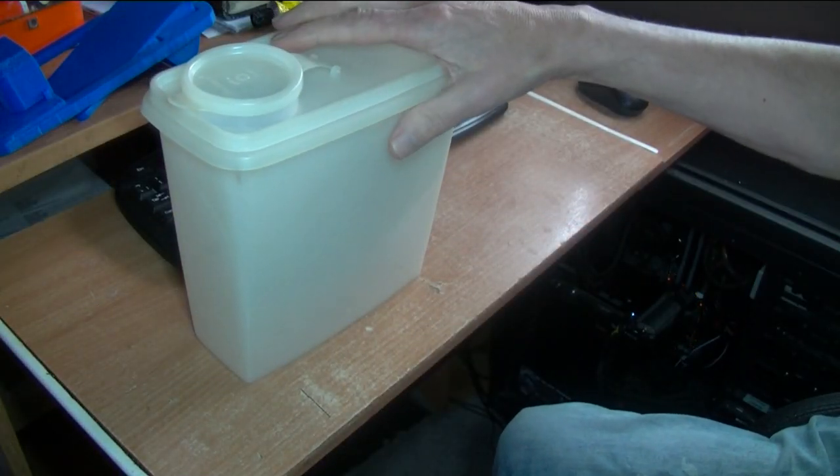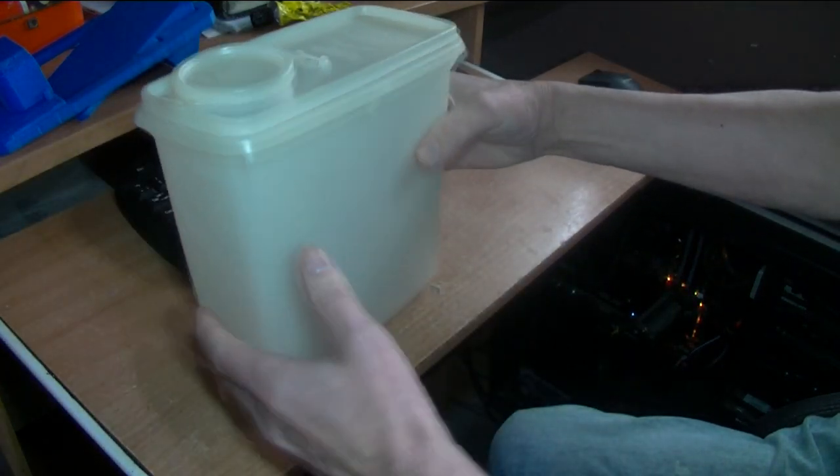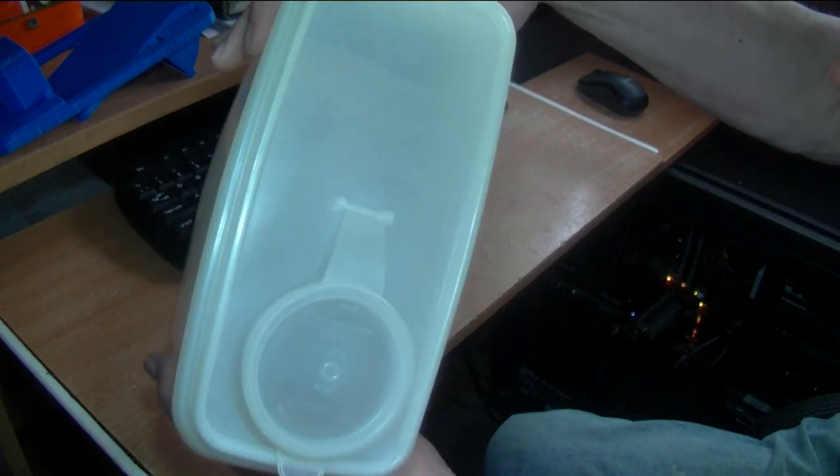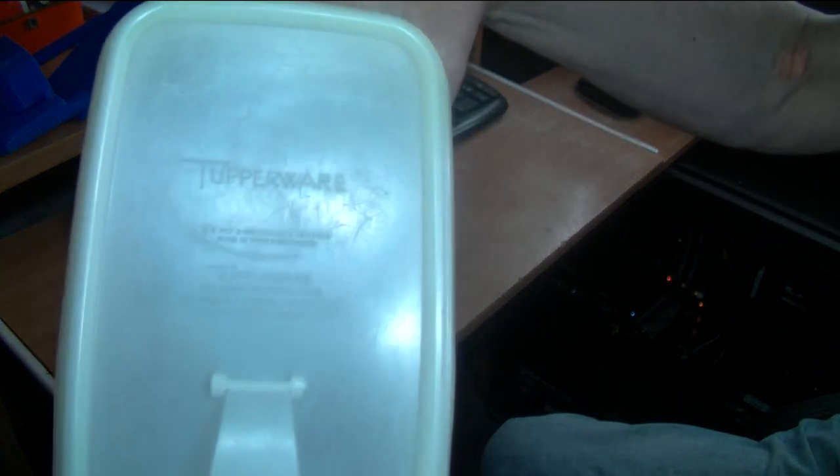This is basically a food container, I think it's for flour, sugar, or maybe rice. I think I got this from Poundland. It does say Tupperware on there.